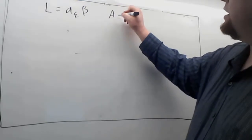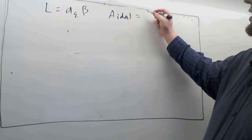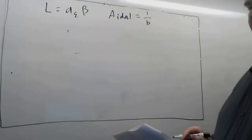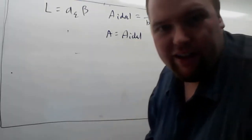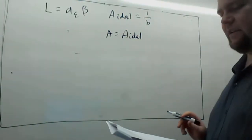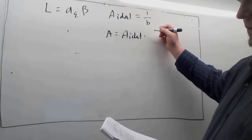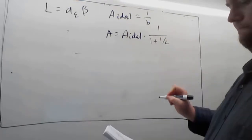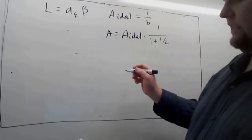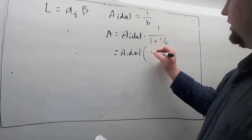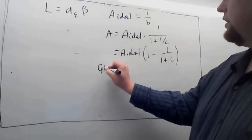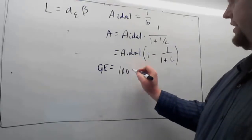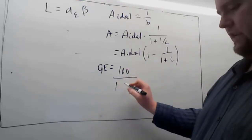In the ideal case, the closed-loop gain of our amplifier is going to be 1 over B. We also know that the deviation from ideal is A_ideal times 1 over (1 plus 1/L), which we can also write as A_ideal times (1 minus 1/(1+L)). That allows us to write the gain error as a percentage: 100 over (1 plus L).